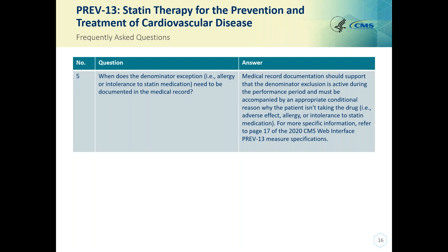Question five — when does the denominator exception for allergy or intolerance to statin medication need to be documented? Medical record documentation should support that the denominator exclusion is active during the performance period and must be accompanied by an appropriate conditional reason why the patient isn't taking the drug — for instance, adverse effects, allergy, or intolerance to statin medication. For more specific information, please refer to page 17 within the PREV-13 measure specifications.